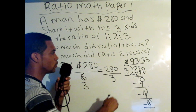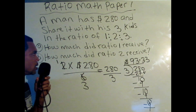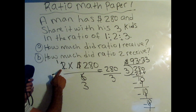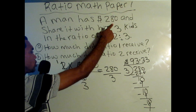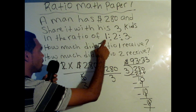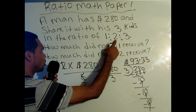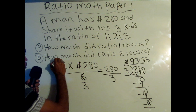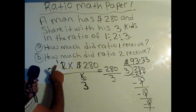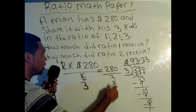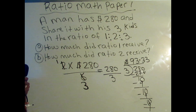Two decimal places is sufficient. So ratio 2 received $93.33. Quick review: the problem asks how much did ratio 2 receive, so we do 2 times $280 divided by 6. We get 6 by adding the ratios of the three persons: 1 plus 2 is 3, plus 3 is 6. We cross-cancel: 2 into 2 is 1, 2 into 6 is 3, giving us 1 times 280 divided by 3. When we divide 280 by 3, we get $93.33. Ratio 2 received $93.33.